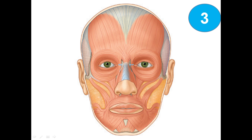Now we look at the muscles of the face. This large muscle is the frontalis muscle, which is the frontal belly of the occipitofrontalis muscle. This one is the temporalis muscle. Around the eye is the orbicularis oculi, and around the mouth is the orbicularis oris.